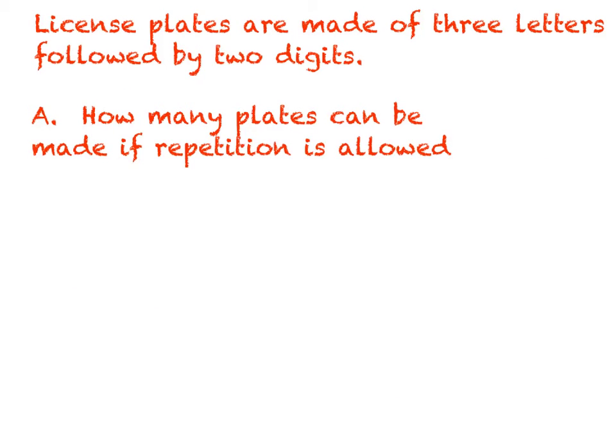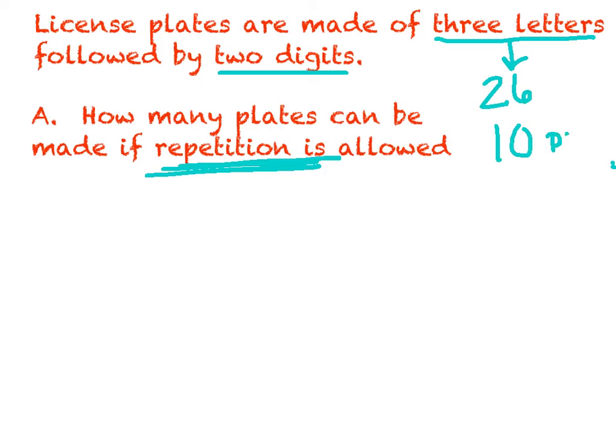All right, our last question for the night is going to have a few parts to it. And it's the famous license plate question. Now, I'm sure you did this back in Algebra 1. And again, if you don't remember, that's okay. But we'll talk through it. License plates are made of three letters followed by two digits. And then we'll run through a couple questions here. So question A, how many plates can be made if repetition is allowed? All right, so the first thing we better figure out is how many letters do you have to choose from? Well, hopefully you know that there are 26 letters in the alphabet. And how many digits do you have to choose from? Well, if you think of 1 through 9, that's 9 digits. But don't forget that 0 is also a digit. So there's actually 10 digits. So I've got letters and digits.